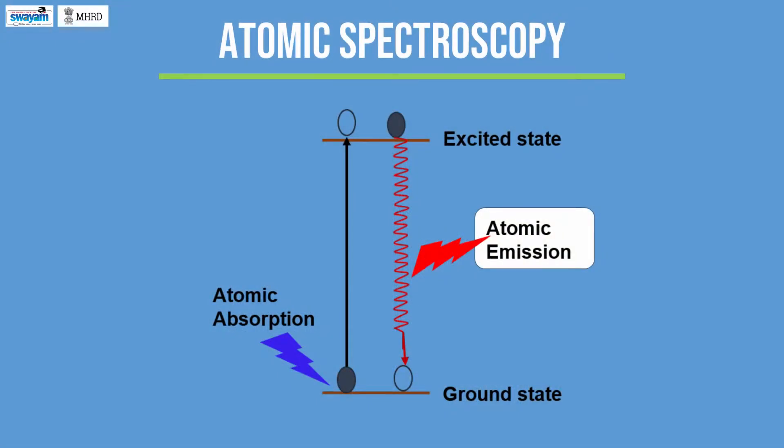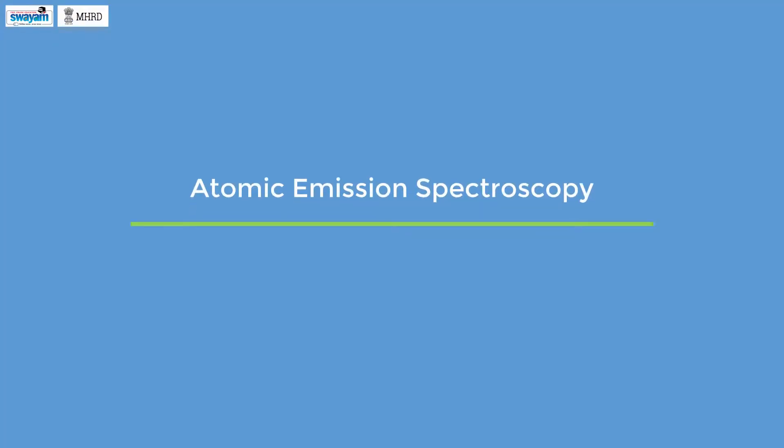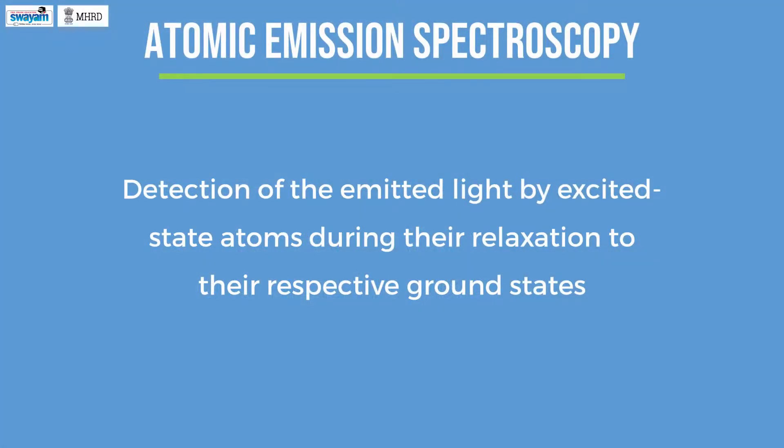On the other hand, atomic emission takes place if an excited electron relaxes back to the ground state. Atomic emission can be measured by atomic emission spectrometers such as flame atomic emission spectrometer, inductively coupled plasma optical emission spectrometer, and so on. Atomic emission spectroscopy is a fundamental technique mainly used for qualitative and quantitative analysis of different elements present in a given solid or liquid sample. This method is based on the concept of detection of the emitted light by excited state atoms during their relaxation to their respective ground states.